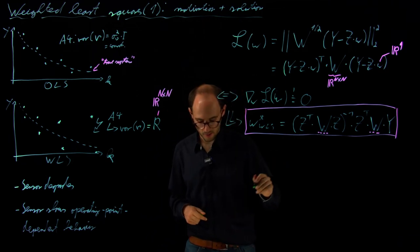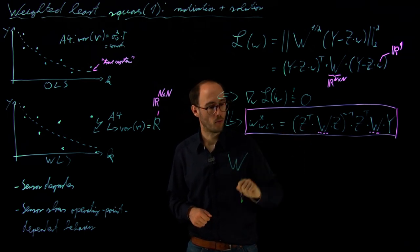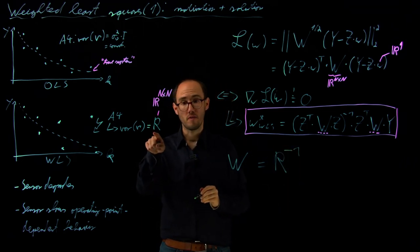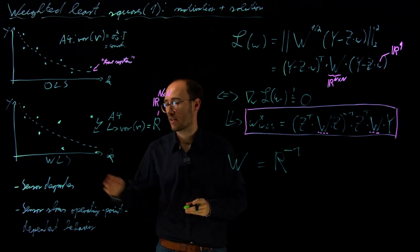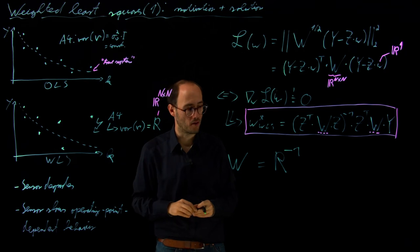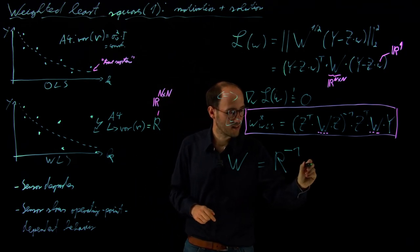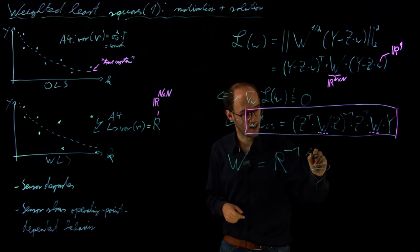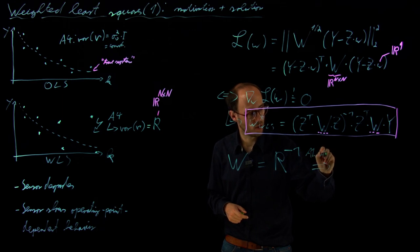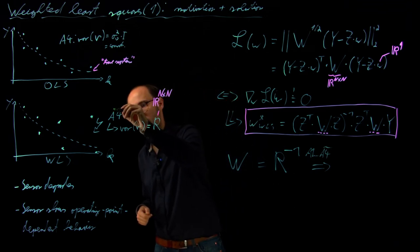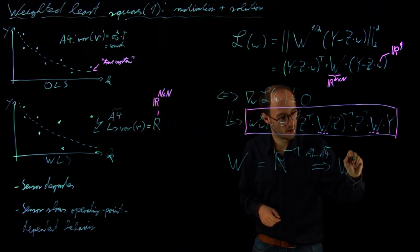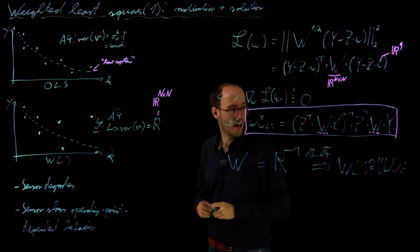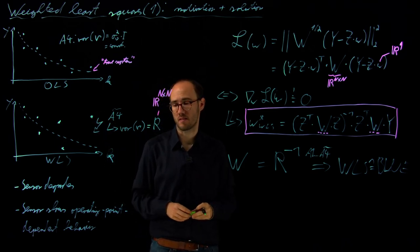The interesting thing is, if I place, or if I choose W, my weighting matrix, as the inverse of my covariance matrix, which represents the noise impact, so the noise impact of every sample, or the noise severity of every sample, then one can actually show that with this modified A4 assumption and our previous assumptions, so that under the assumptions A1 to A4 tilde, that the WLS is actually again BLUE, so the best linear unbiased estimator in this context of this modified noise impact.